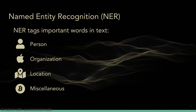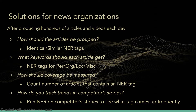We propose named entity recognition (NER) as a solution to these problems. NER can tag important words in text, such as a person, an organization, a location, or a miscellaneous proper noun that doesn't fall into the first three categories. NER tags can group articles, serve as keywords to improve search results, quantify coverage to ensure even reporting on political candidates, and help keep a news organization on top of trending names or stories by running NER on rival content.